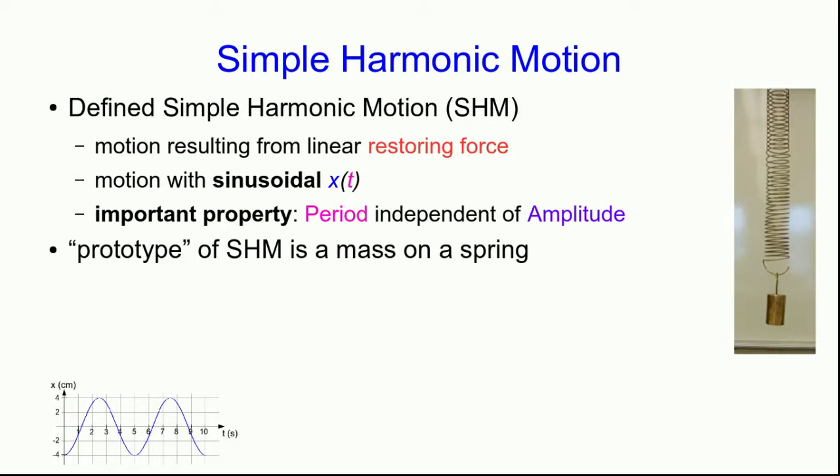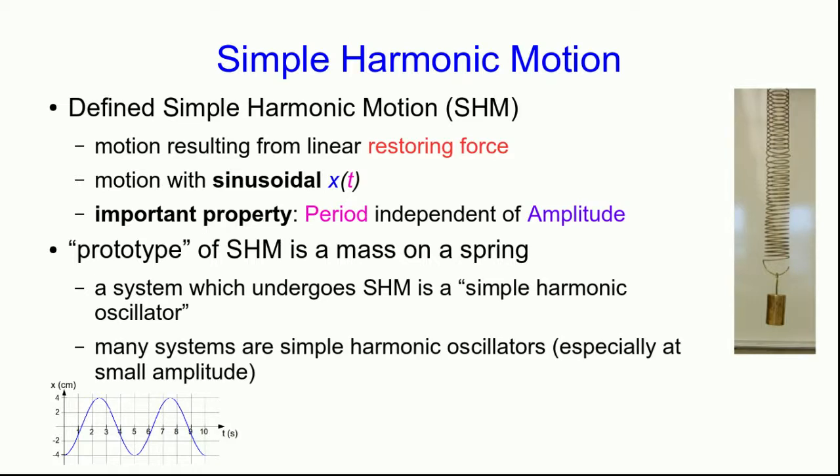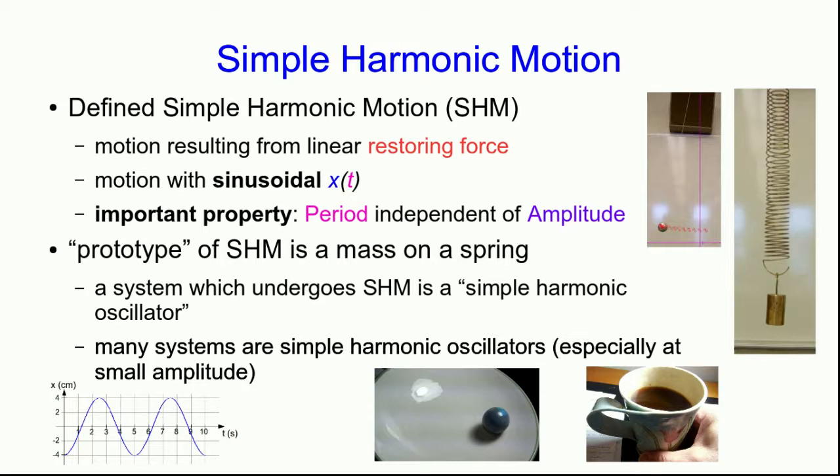The prototype of simple harmonic motion is the mass on a spring, but any system which undergoes simple harmonic motion is what we call a simple harmonic oscillator. And many systems are simple harmonic oscillators aside from the mass on the spring, especially when they're at small amplitudes, and we saw some examples of those.